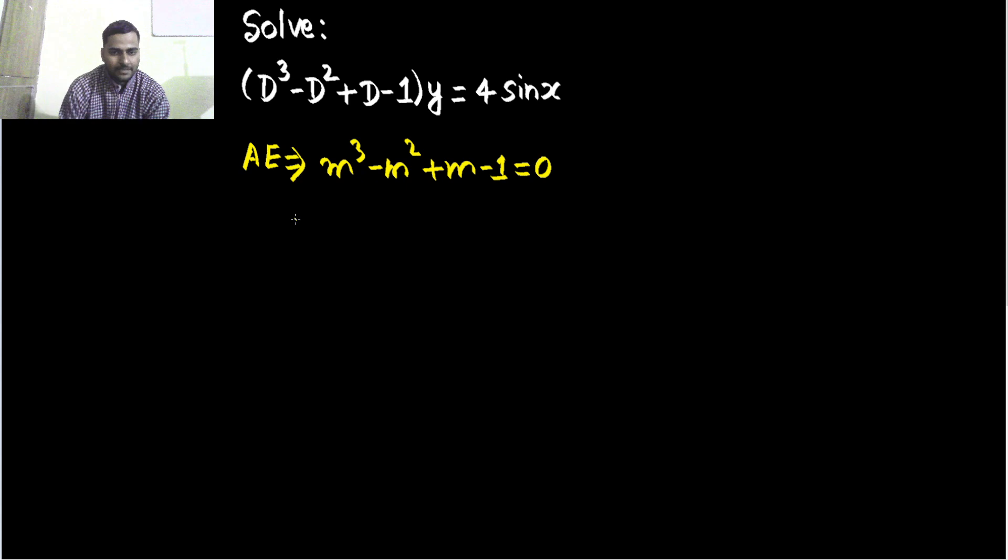Let's solve this and find the values of m. So we can take m² common from the first two terms you get m - 1. You can take one common from the latter two terms you get m - 1 common equals to 0. Therefore you get (m - 1)(m² + 1) = 0.